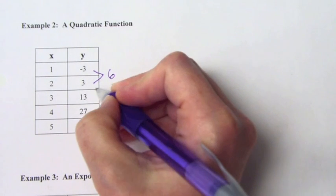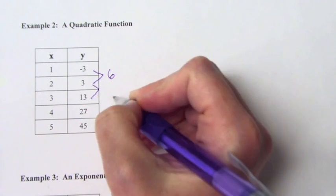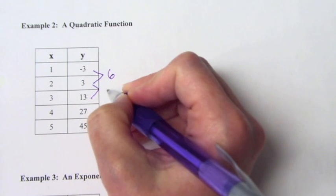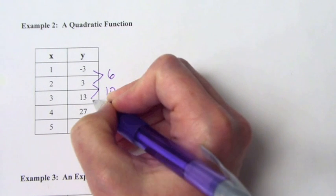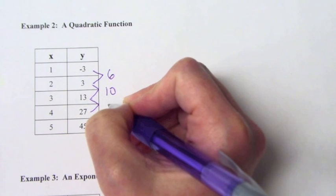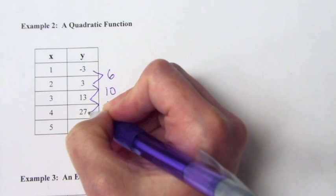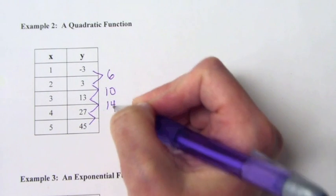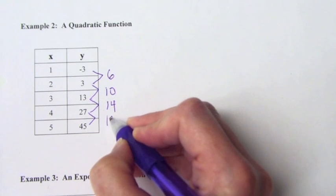Six. What's the difference in three and thirteen? Not six. Ten. And then thirteen and twenty-seven? Fourteen. You're adding four. Twenty-seven and forty-five? Eighteen.